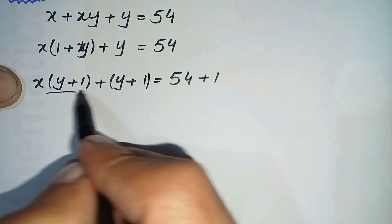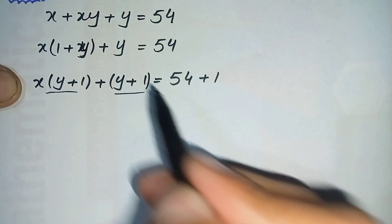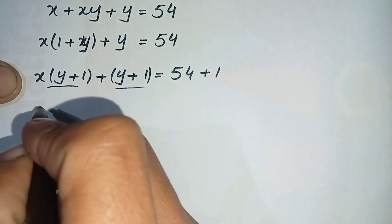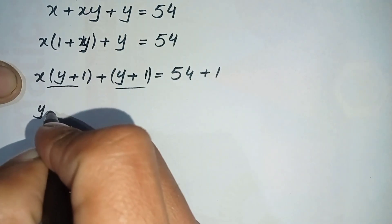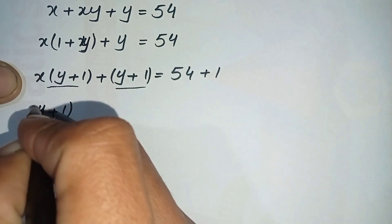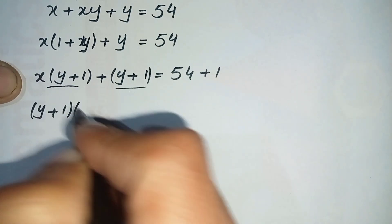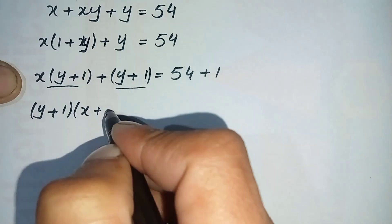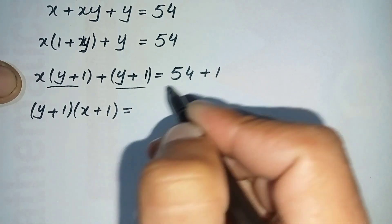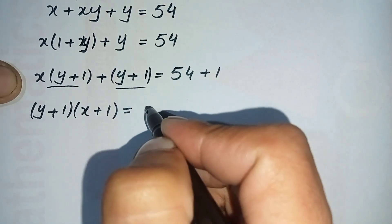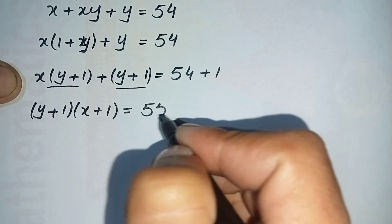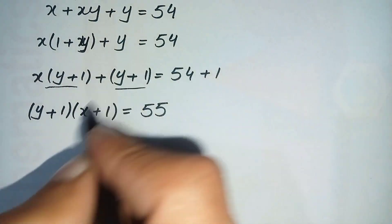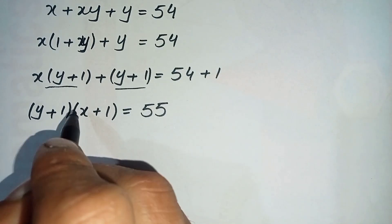Now, (y + 1) is common in both terms, so we take (y + 1) common. It becomes (y + 1)(x + 1) = 55. Here the product of two expressions is equal to 55.